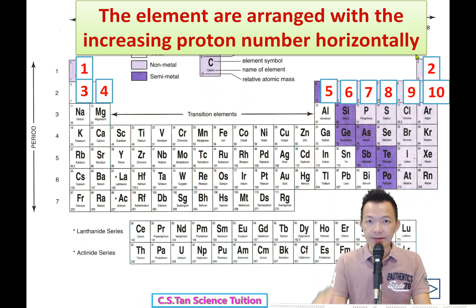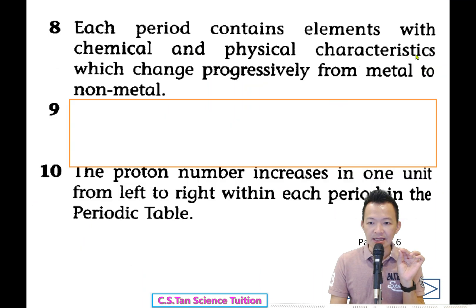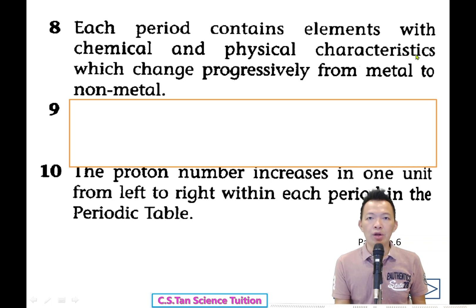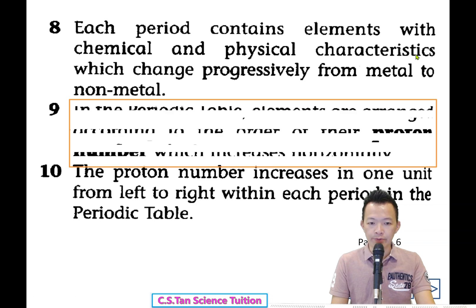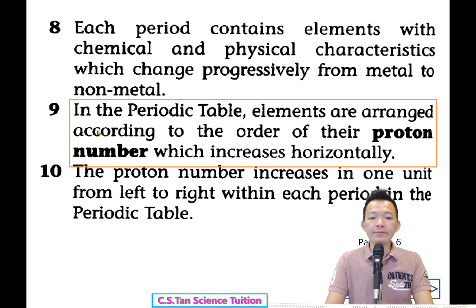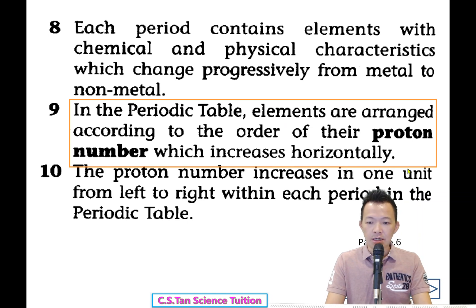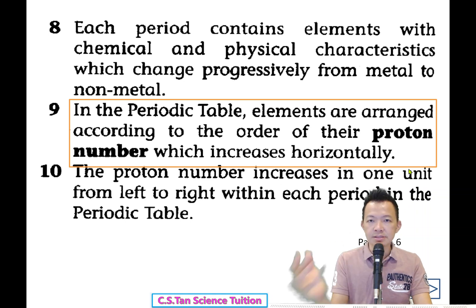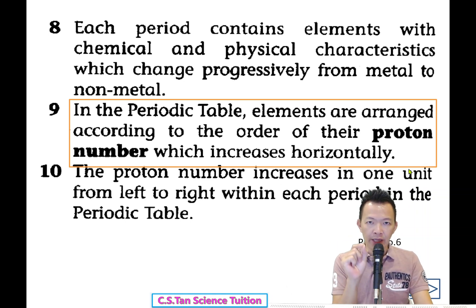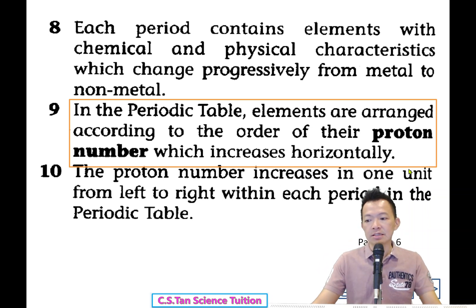This is your answer. Now turn to page number 6. Copy the answer a second time. 'How are the elements arranged into a table called the Periodic Table of Elements?' In the periodic table, the elements are arranged according to the order of their proton number, which increases horizontally. Different books may use different sentences, but the meaning is the same: arranged with the increasing proton number horizontally.